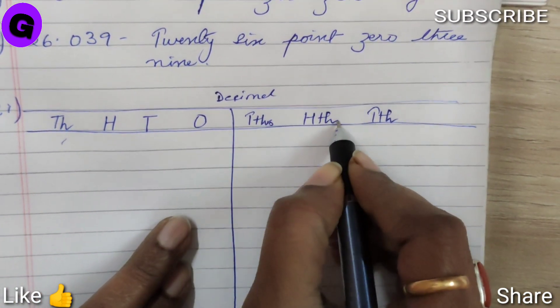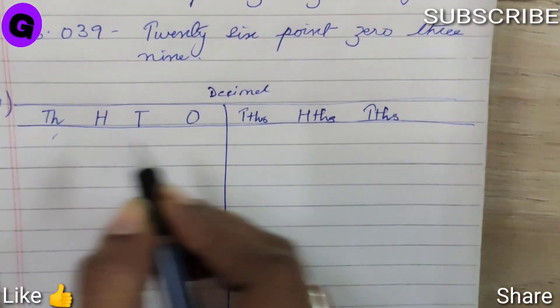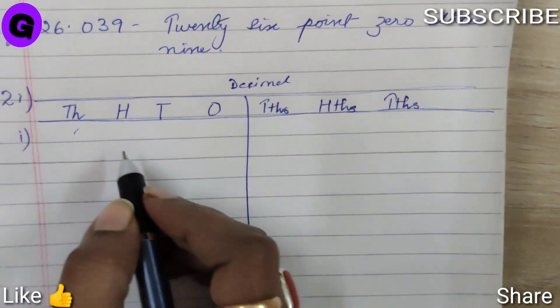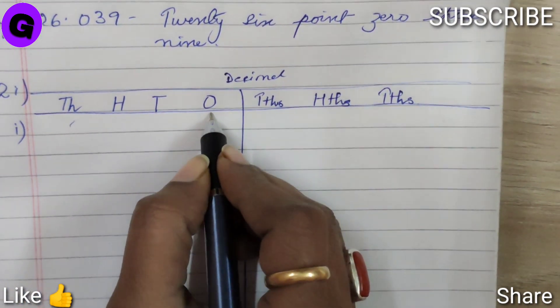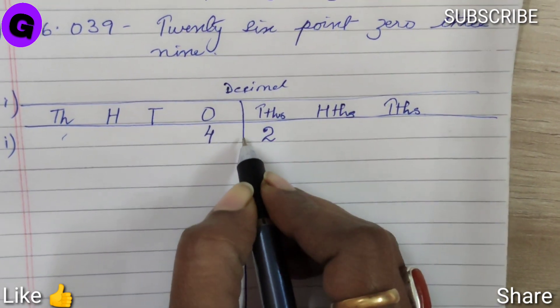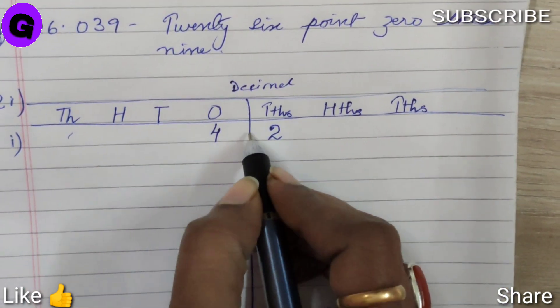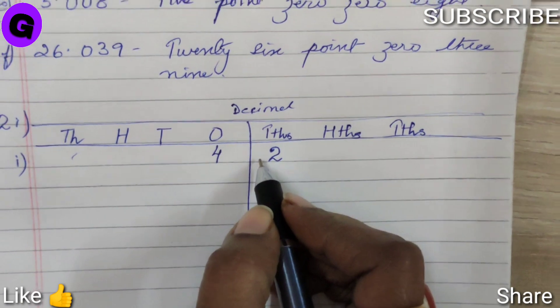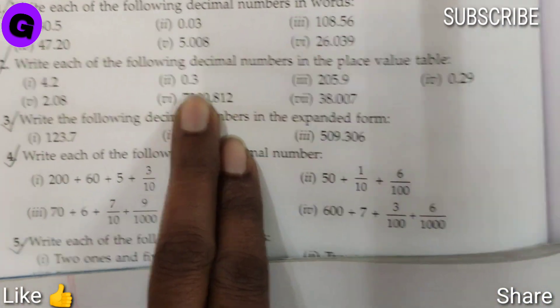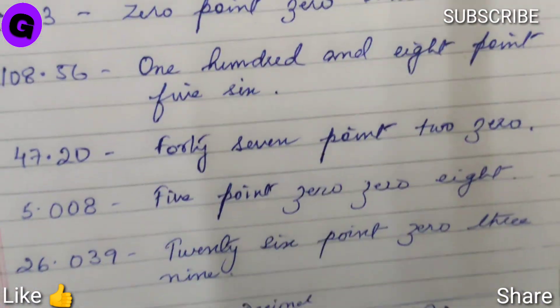Number 1, it says 4.2, so we will write 4 in one's column and 2 in tenths because there is a point here, 4.2. Next number 2, 0.3, so 0 we are going to write in one's column and 3 will be written in tenths column.